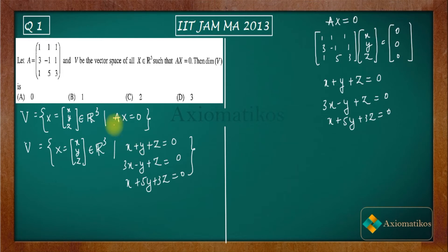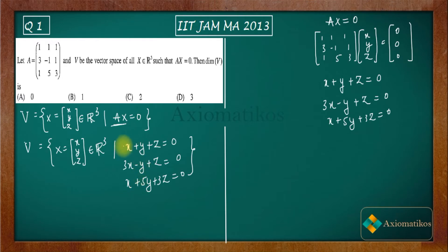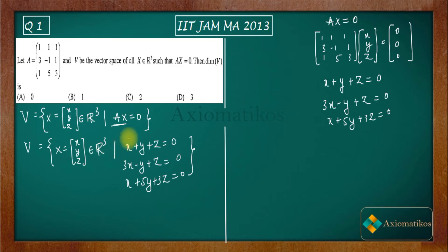The meaning of Ax = 0 is that V consists of all vectors from R³ which satisfy these three conditions. We generally call these three conditions 'restrictions,' because they restrict which elements from R³ can enter V. If an element satisfies all three restrictions, it enters V. However, if one equation is a linear combination of the other two, satisfying only two conditions may be sufficient.